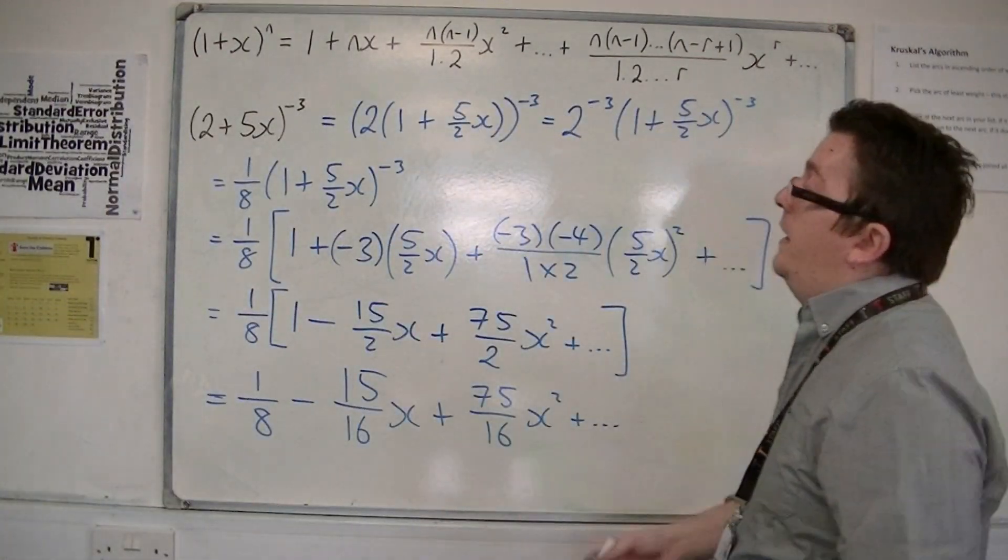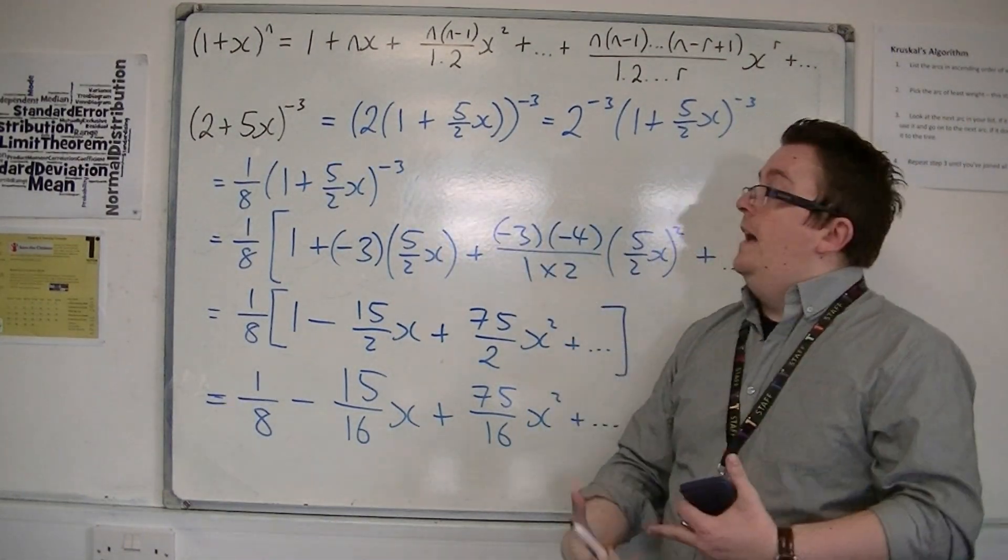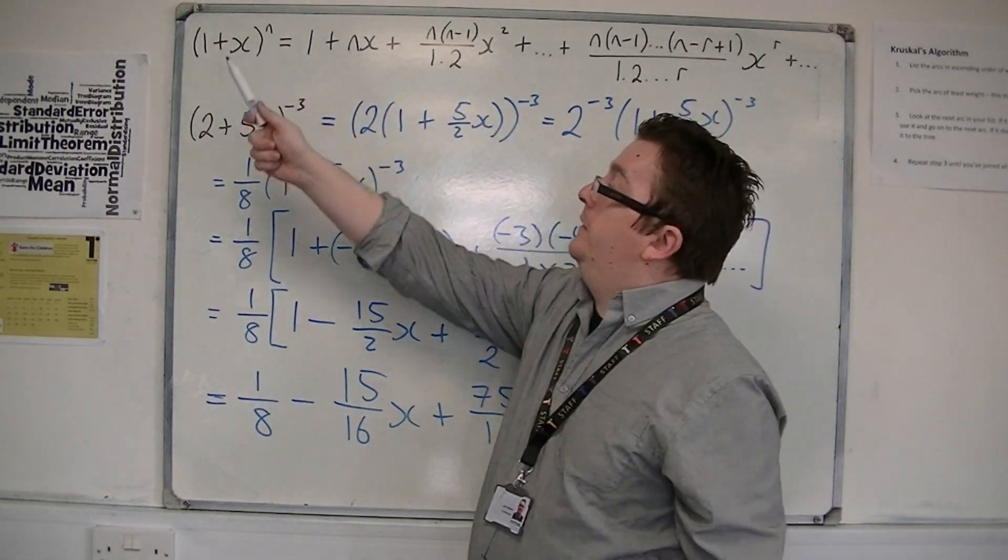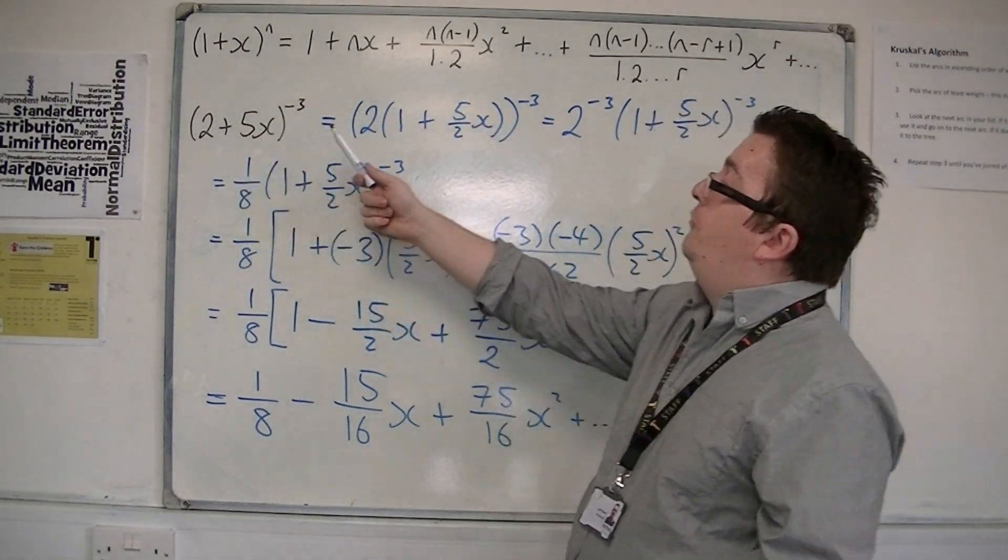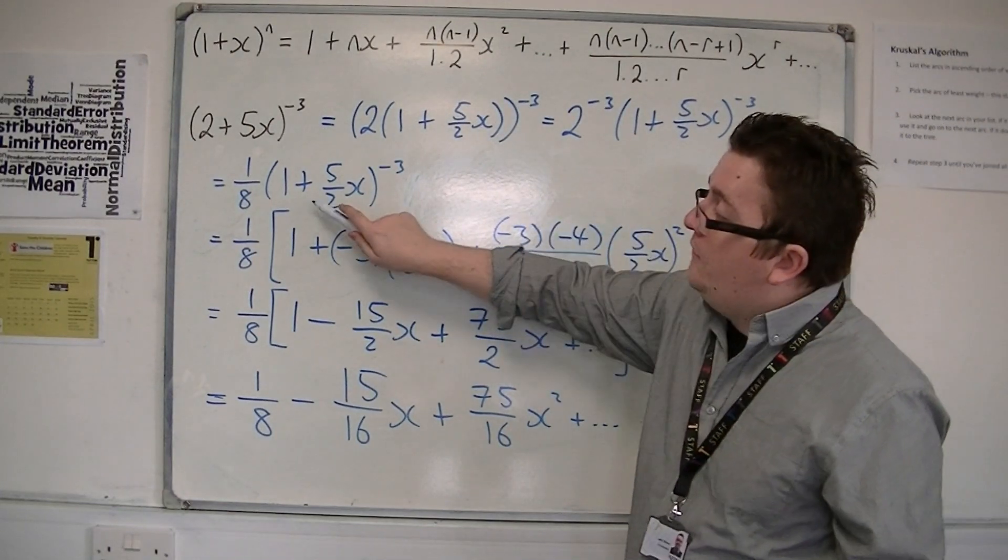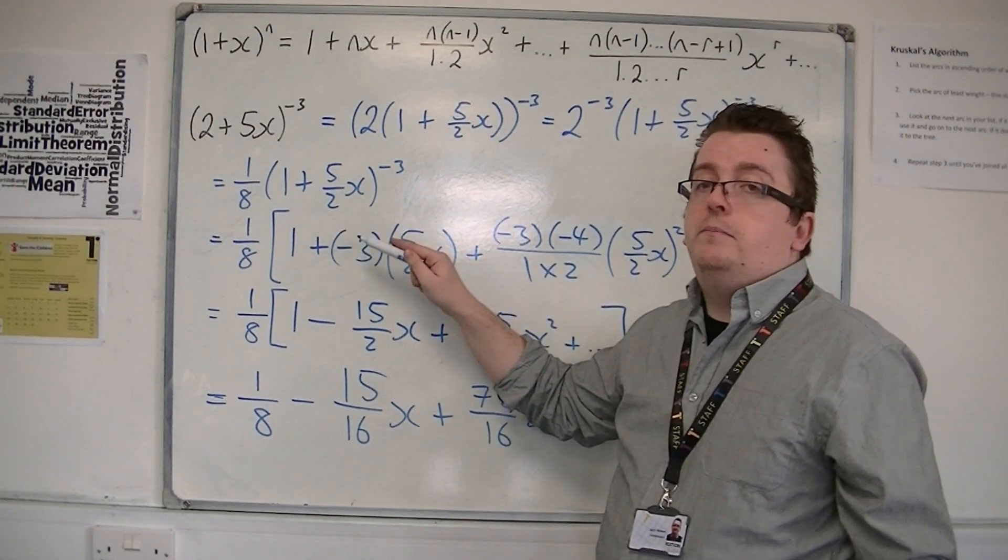And that is how you can expand something that is of this format, that isn't currently as 1 plus x, or 1 plus something. You need to make sure you factorize the 2 outside of the bracket, so that you have it in this format, 1 plus something, or 1 minus something.